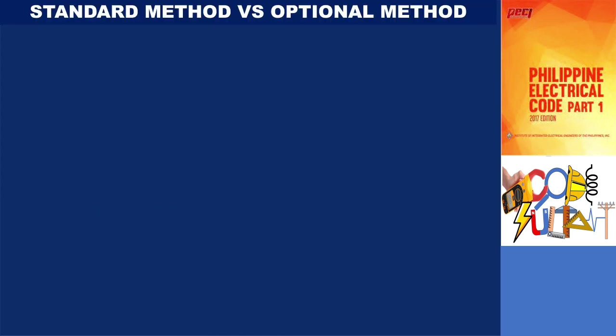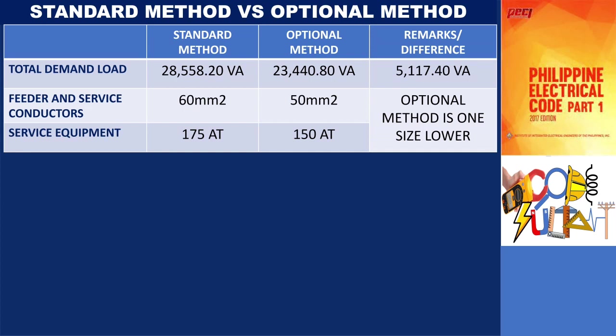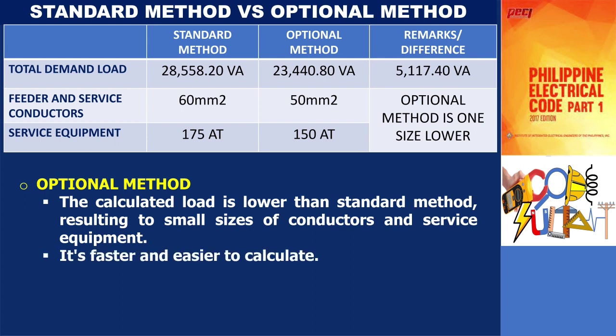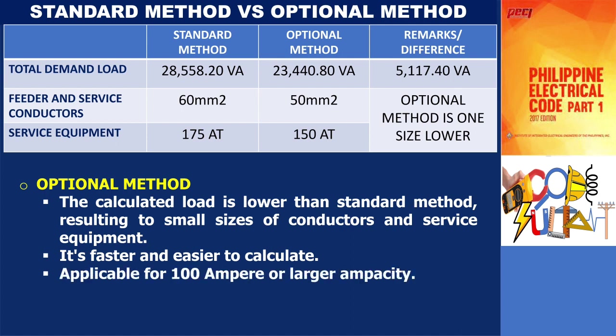The table provided presents a comparison between two methods used to calculate the feeder and service load for the same project. Based on the data, we can conclude that the optional method yields a lower total demand load compared to the standard method. Moreover, the optional method has the added benefits of being faster and simpler to calculate. However, it is important to remember that the optional method can solely be applied to dwelling units with an ampacity of 100 amperes or more.